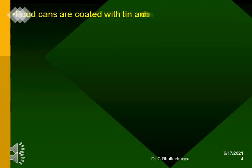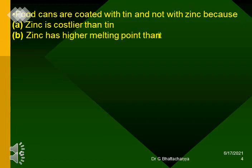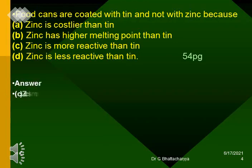Food cans are coated with tin and not with zinc because: A. Zinc is costlier than tin. B. Zinc has a higher melting point than tin. C. Zinc is more reactive than tin. D. Zinc is less reactive than tin. Answer: C. Zinc is more reactive than tin.